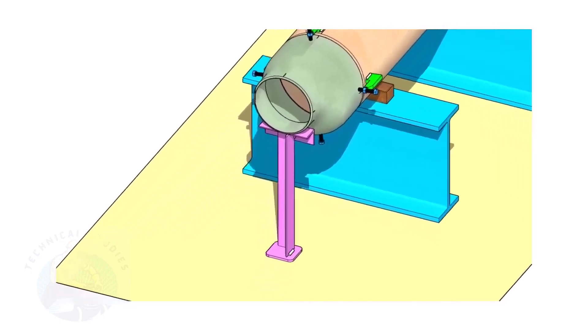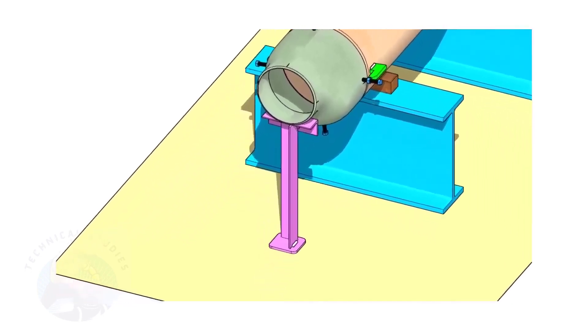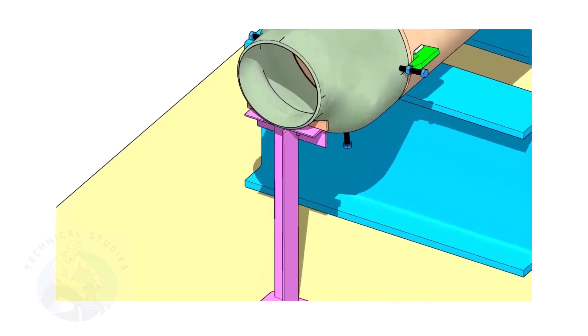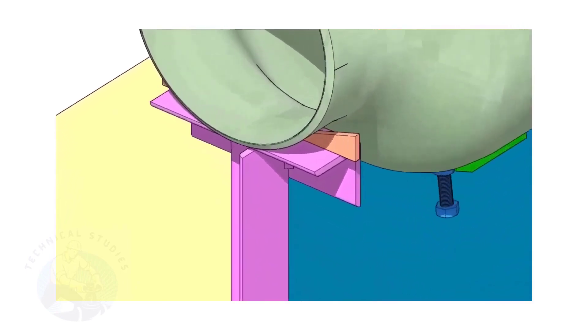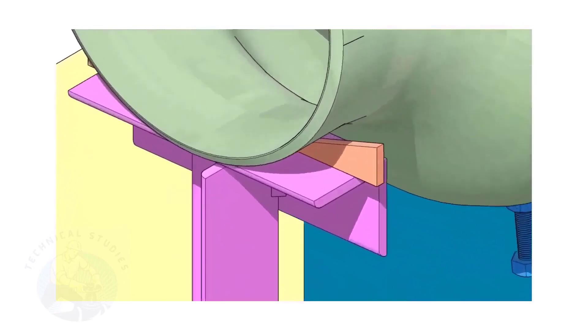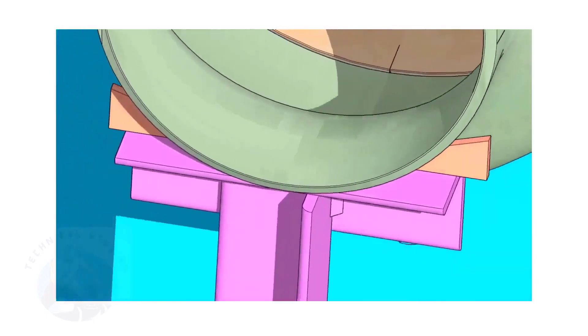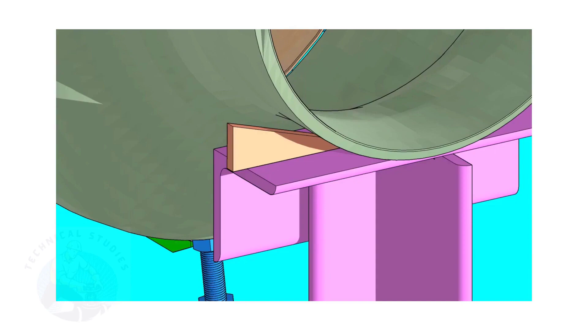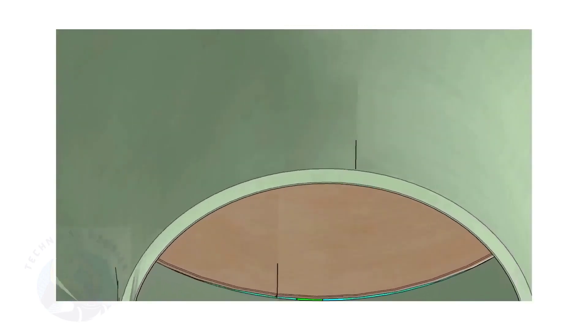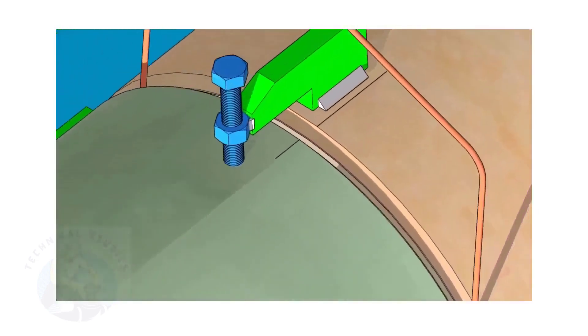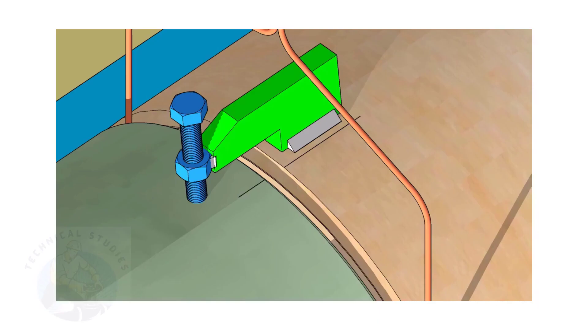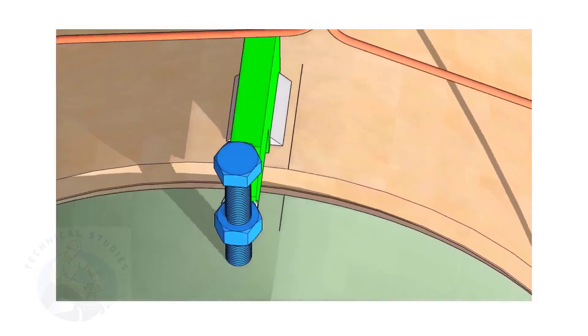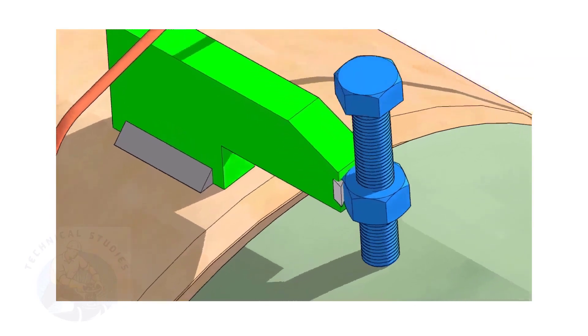Arrange proper supports below the reducer. The height of the support shall be adjustable. Here, I used simple wedges. Put the gap rod in the joint. The gap shall be 3 millimeters to 4 millimeters, depending on the welding process.